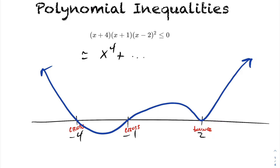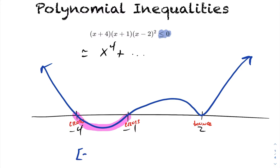Now we want to analyze the inequality — in this case, where is the polynomial less than or equal to 0. Graphically, your polynomial is less than or equal to 0 when it's on the x-axis or below. The answer would be a square bracket on negative 4, because we include that negative 4 — that's when the polynomial equals 0 — and continuing on the number line until we hit negative 1, with a square bracket at negative 1 to signify we're including it since the polynomial equals 0 there.